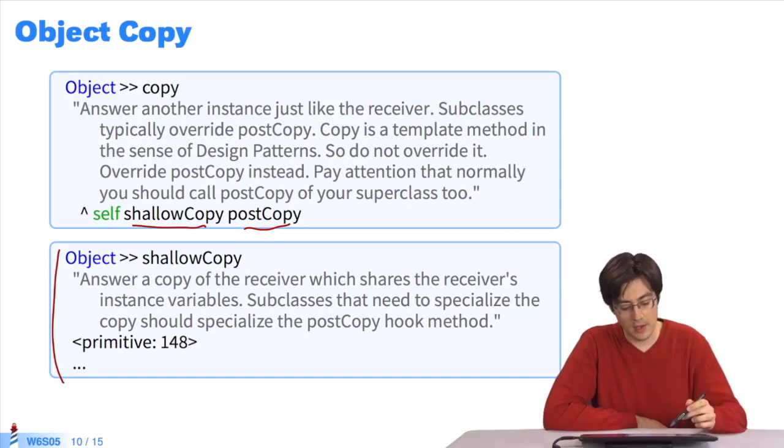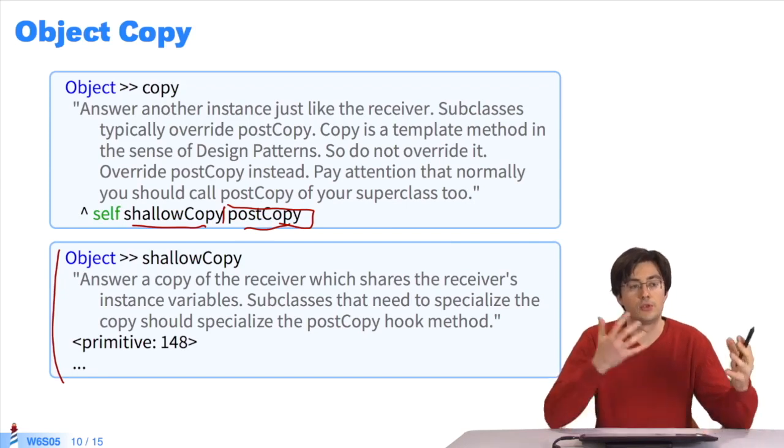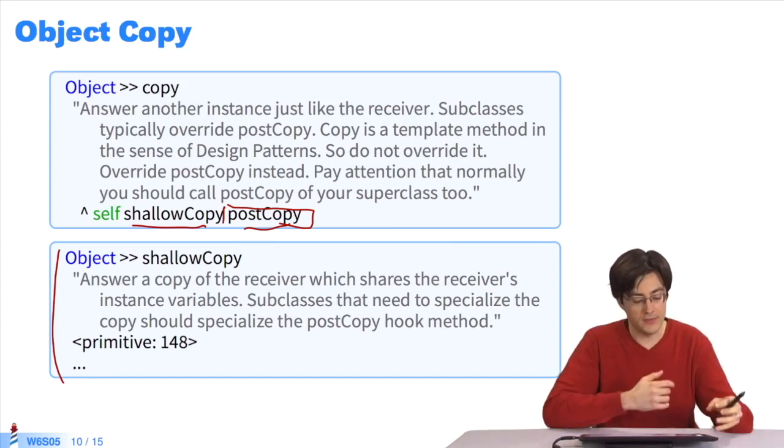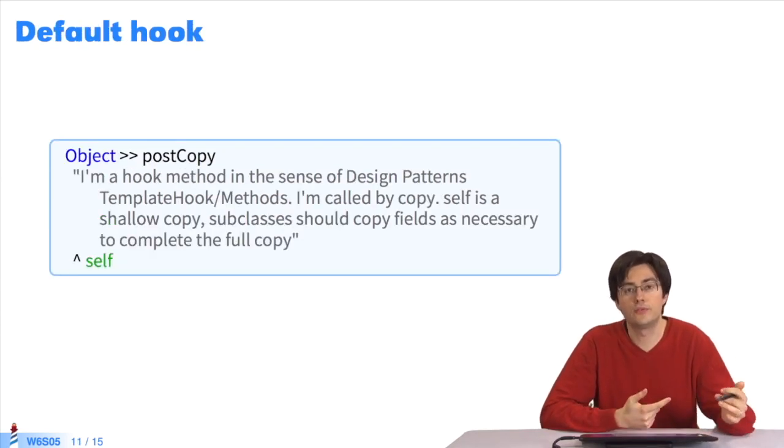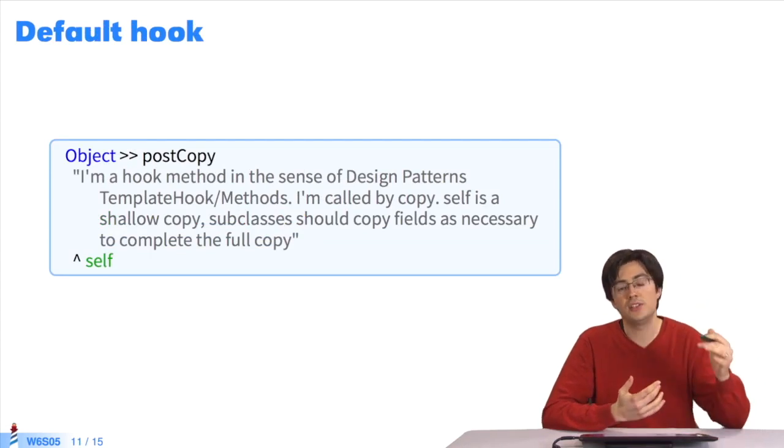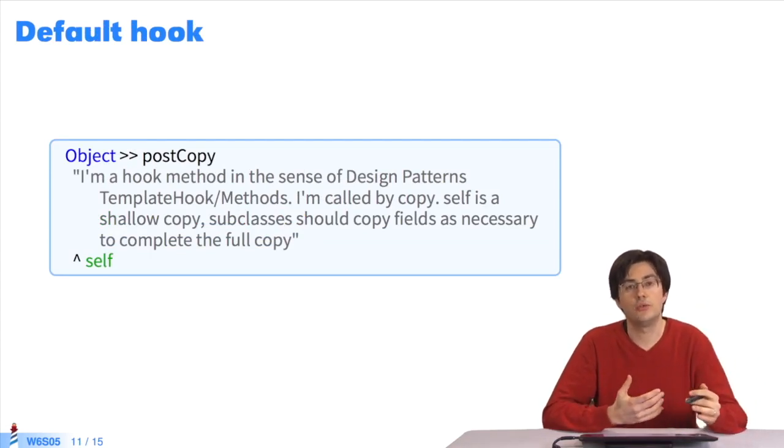That is the default behavior of shallowCopy. Depending on what postCopy does, variables will or will not be shared. If postCopy is empty, all variables are shared. But the classes can decide to put different things into postCopy in order to share certain variables or nothing at all.